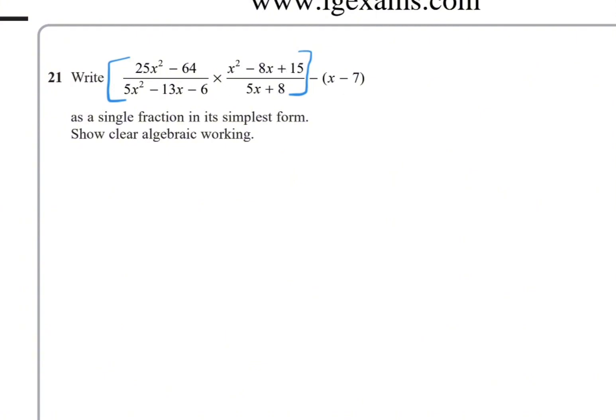So for the first fraction, 25x² - 64, this is the difference between two squares. We can factorize as (5x + 8)(5x - 8).